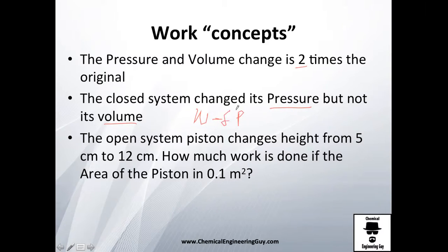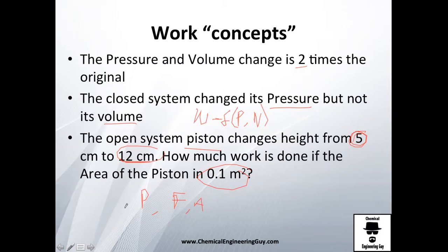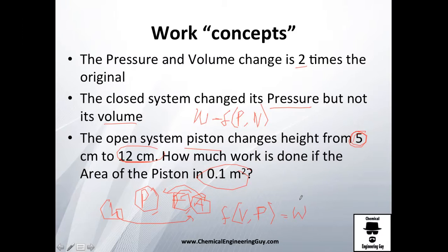A closed system changes its pressure but not its volume — so later we're going to relate that sometimes work is a function of pressure and volume. For an open system, a piston changes height from 5 centimeters to 12 centimeters. How much work is done? If you know the area on the piston, you know force and pressure. With the area and height you get a volume, and with force and area you get a pressure — so you have volume, you have pressure, and this is a function of work.